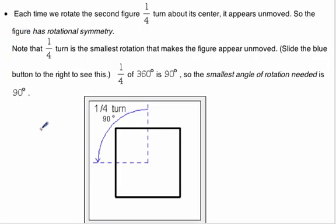Okay, continuing on with the next shape. Now we notice that we can rotate this figure a quarter turn about its center, and it appears unmoved. So that means that it does have rotational symmetry.